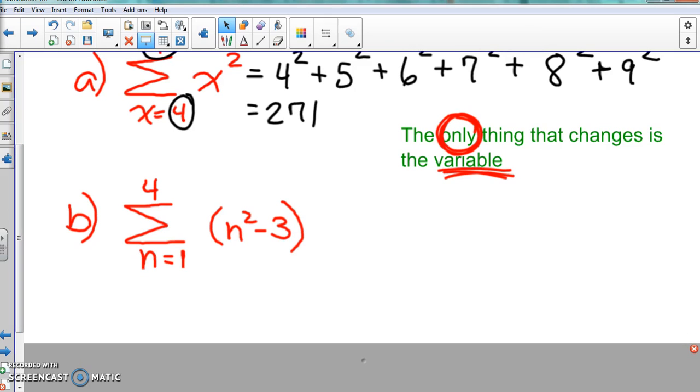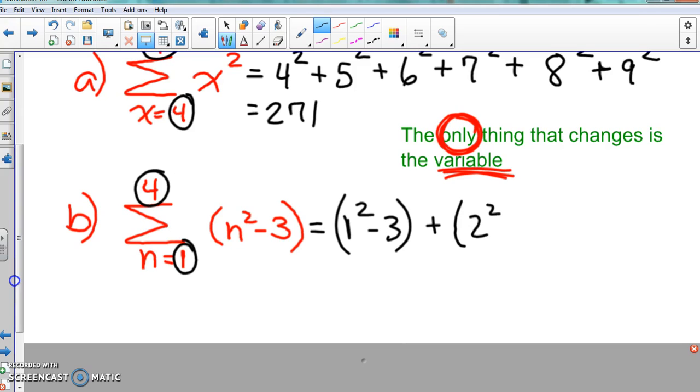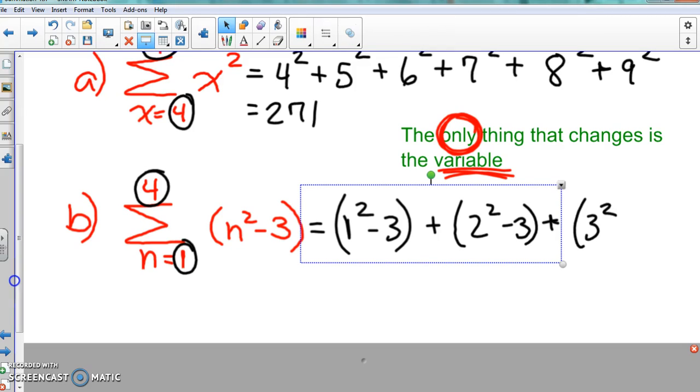It's a little bit harder, just a little bit more stuff in there. But again, it's the same exact thing we just did. The only thing that changes is just the variable. So N is the only thing that's going to change for each one of these. So now we're going to start off with 1 and we're going to end at 4. So here, 1, so we'll do 1 squared minus 3 plus 2 squared minus 3 plus 3 squared minus 3 plus 4 squared minus 3.